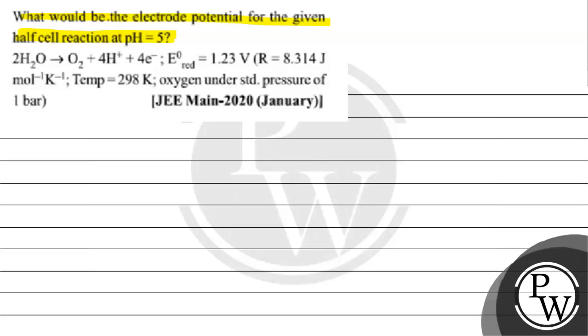We have the question at pH 5, what is the electrode potential? We have reaction 2H2O gives O2 plus 4H+ plus 4 electrons, E0 reduction 1.23V, R value 8.314 J per mol per kelvin, temperature 298K.